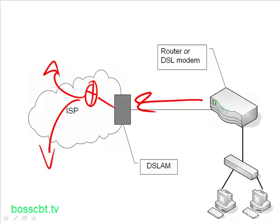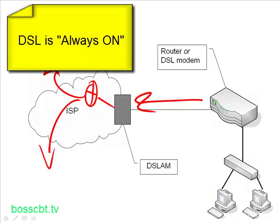DSL introduced the concept of always-on connectivity. With dial-up analog modems, you had to dial into something — either a modem bank at your ISP or another computer — using a phone number because it used the PSTN. People were always conscious of how long they were online because it was essentially a phone call. With DSL, you didn't have to dial in every time you wanted to get online. You would connect once and then you were always on. Back at the time, this was a very different approach for most people.